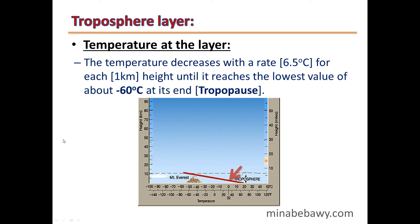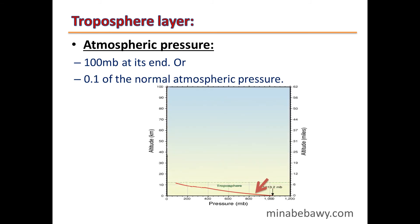The temperature in the Troposphere decreases gradually at a rate of 6.5°C for each 1 km of height, until it reaches approximately −60°C at its end. The top boundary of the Troposphere is called the Tropopause. Atmospheric pressure also decreases gradually until it reaches 100 mb at the Tropopause, which is equivalent to 0.1 of the normal atmospheric pressure.